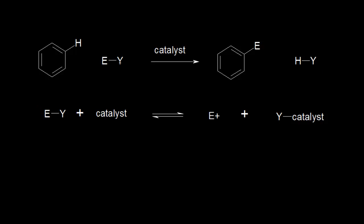Let's look at the general reaction for electrophilic aromatic substitution. We start with a benzene ring and react it with a molecule that contains an electrophile. In electrophilic aromatic substitution, we substitute the electrophile for a proton on our benzene ring — that's the electrophilic and substitution parts. The aromatic part comes in because we're going to reform an aromatic ring in the mechanism.